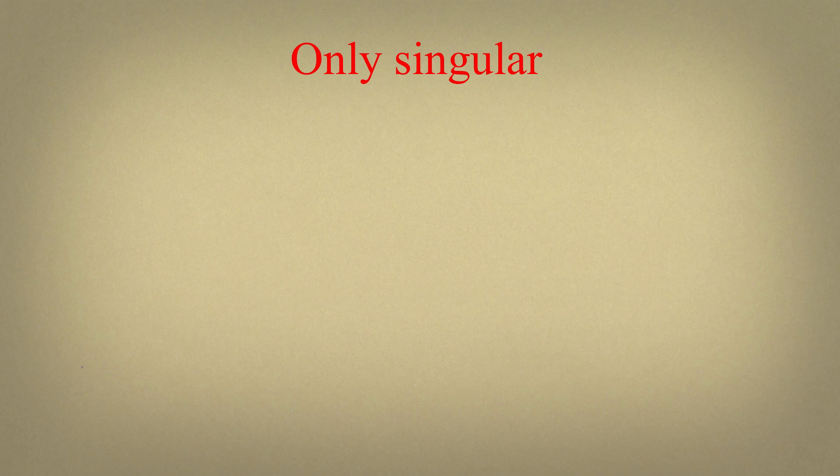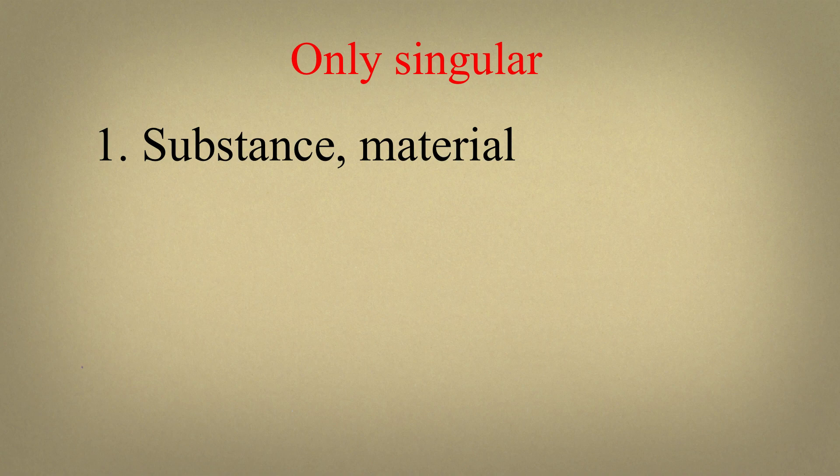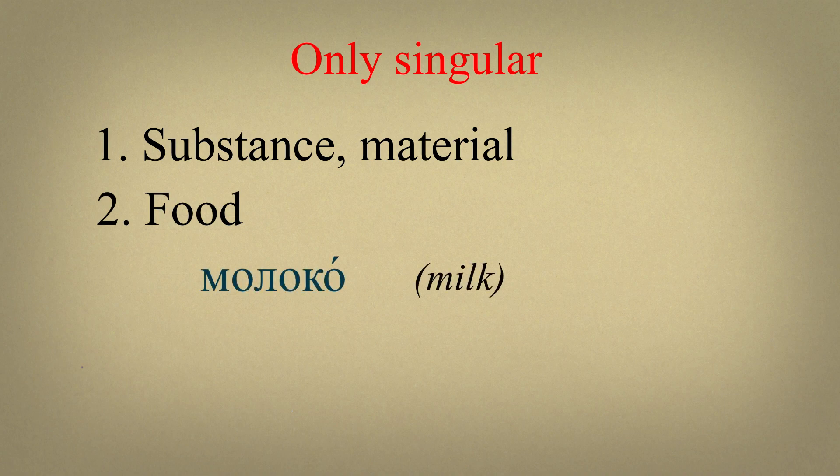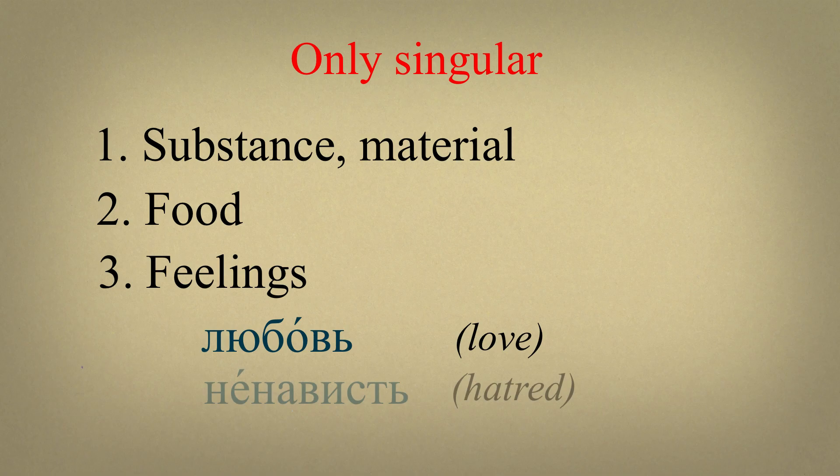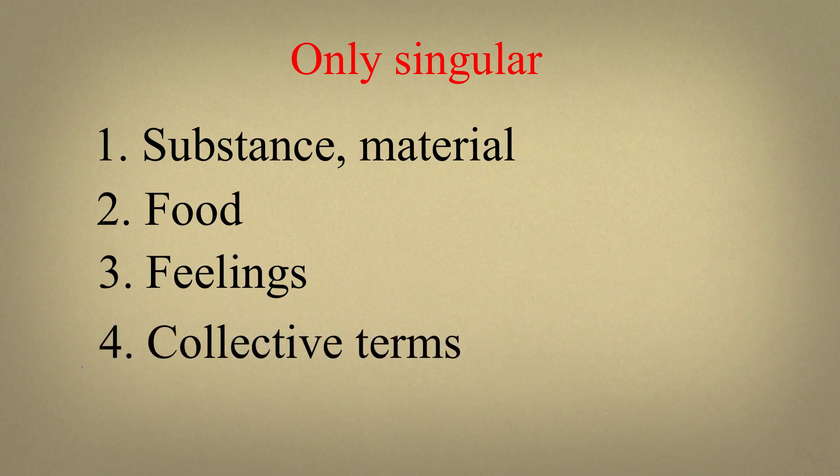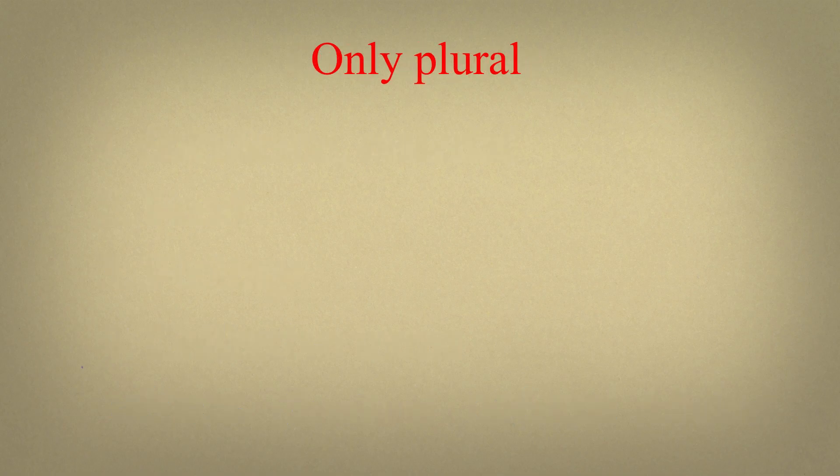Some nouns have only singular form. These words refer to: 1. Substance and material, for example железо, кислород. 2. Food, молоко, соль. 3. Feelings, любовь, ненависть. And 4. Collective terms, мебель, одежда.